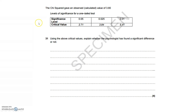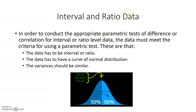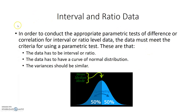I hope that example made things a little clearer, but if not, refer to the textbook. Now we're going to look at interval and ratio data. In order to conduct the appropriate parametric tests of difference or correlation for interval or ratio level data, the data must meet the criteria for a parametric test: the data has to be interval or ratio, it has to have a curve of normal distribution, and the variances should be similar. A normal distribution curve is one where the mean, median and mode are all at the top point and it has symmetry about the middle. Make sure you commit this to memory as you're likely to get it on a multiple choice question.